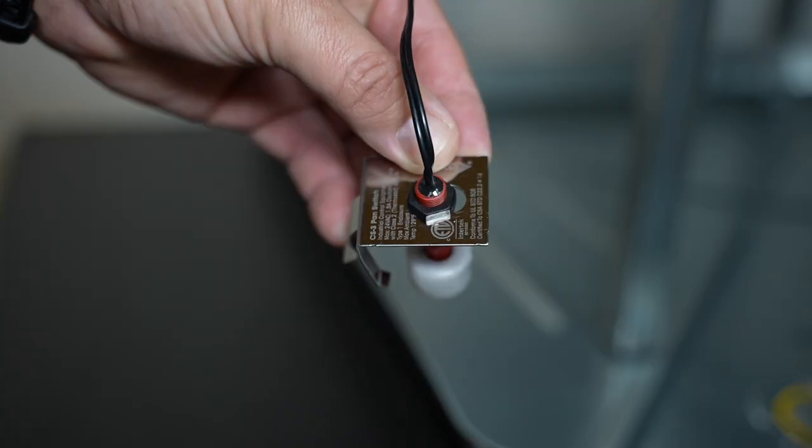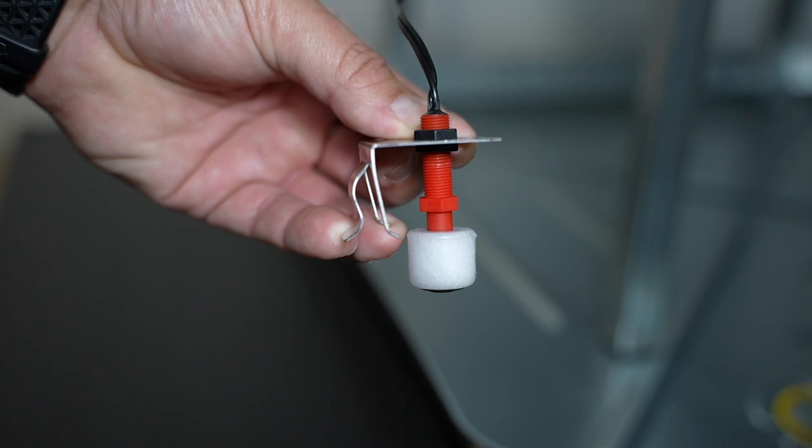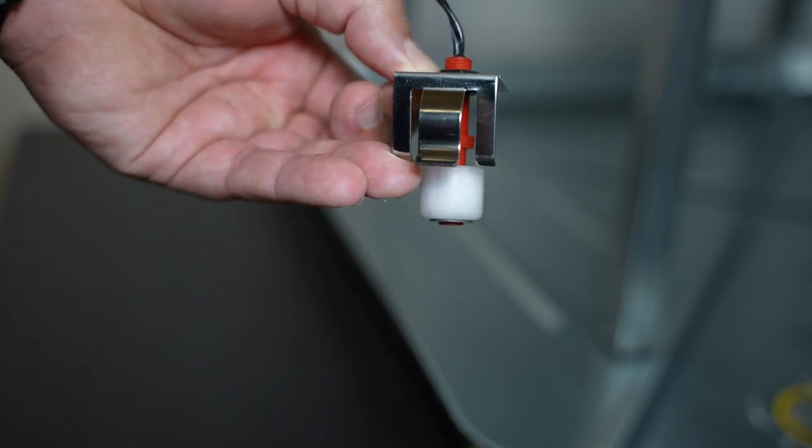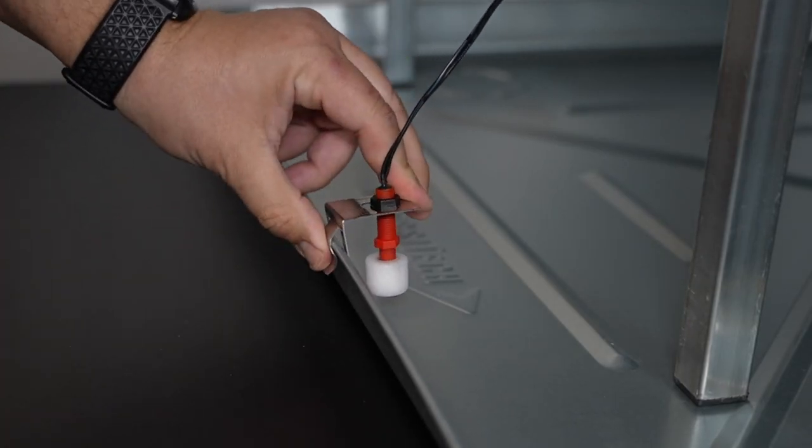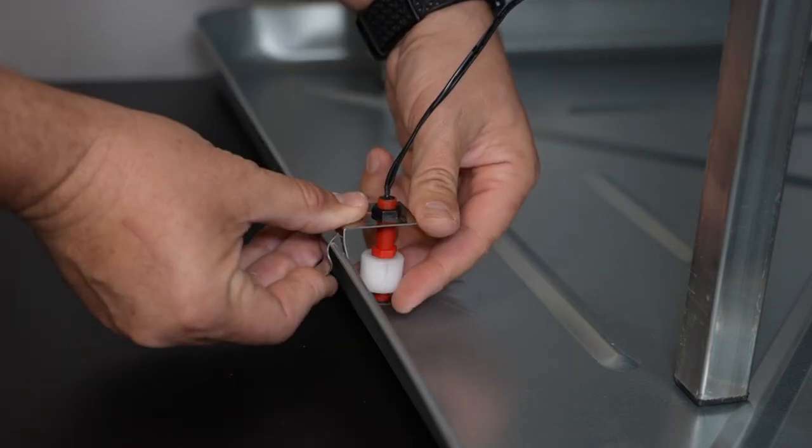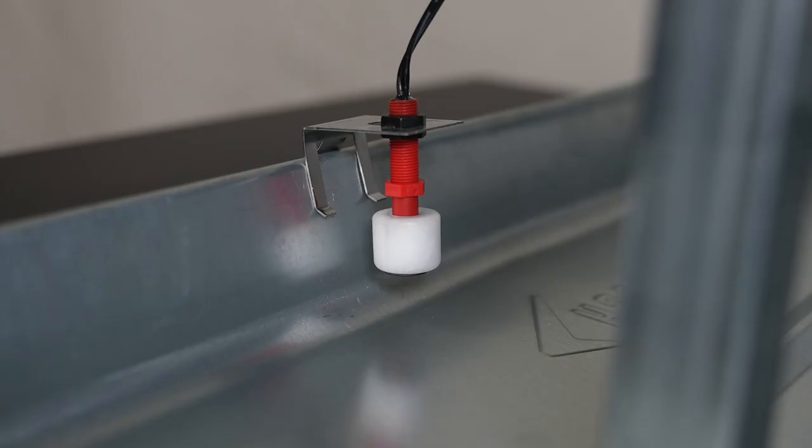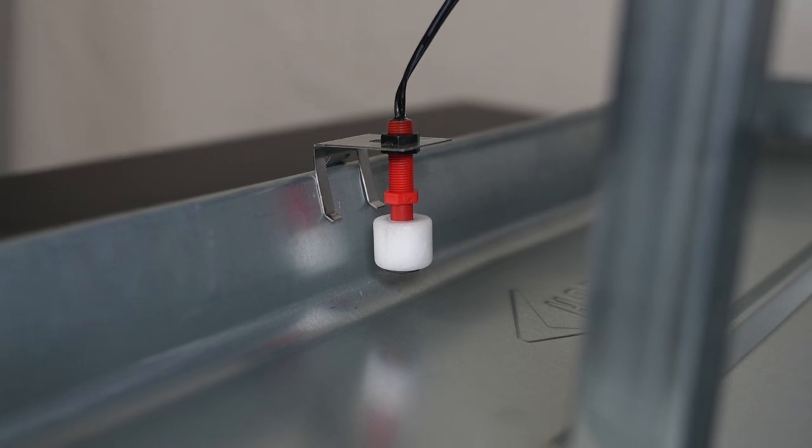The CS3 condensate overflow switch is a clip-on style switch designed for primary and secondary pans. It has adjustable activation height. Its design lets you easily position it anywhere along drain pans. It's made for standard primary and secondary drain pans.